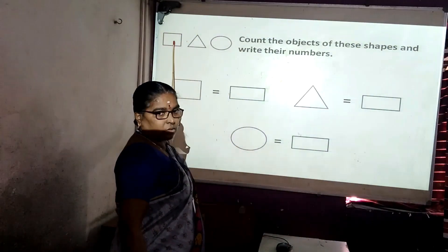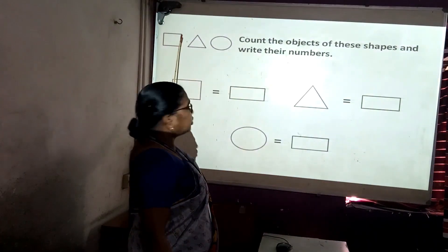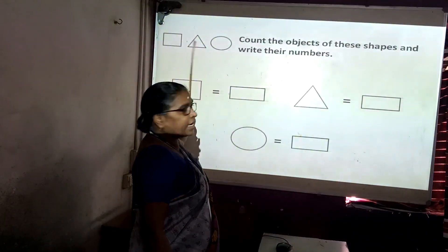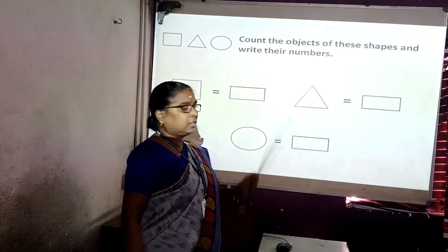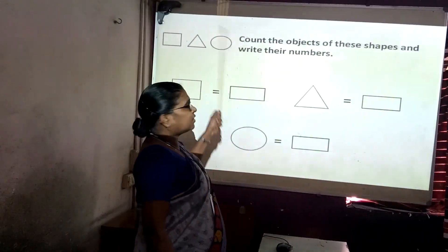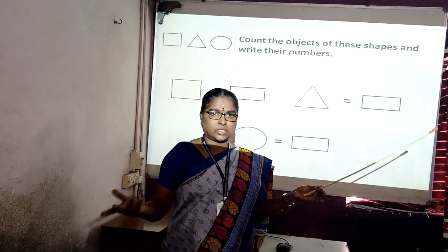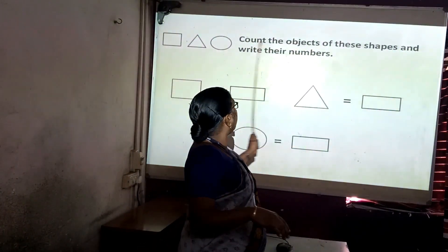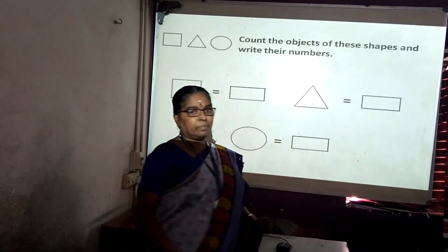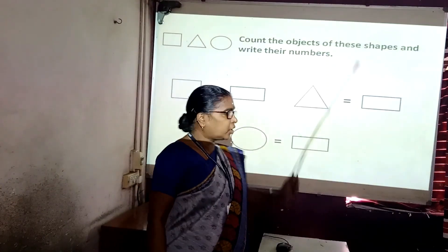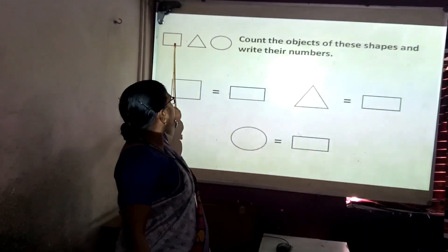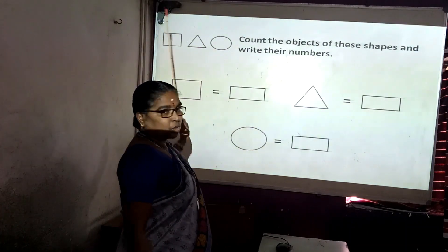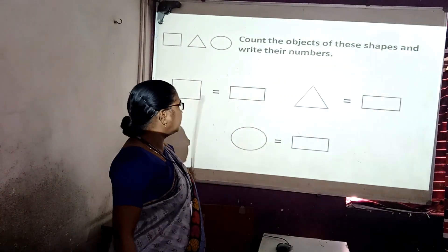Here, square or rectangle is given — that is a four-sided figure. Then triangle — triangle is a three-sided figure. And circle — circle has no sides. So count the objects of these shapes and write the numbers. First we are going to see the four-sided figures — we can say square or rectangle.